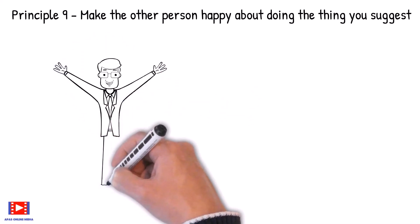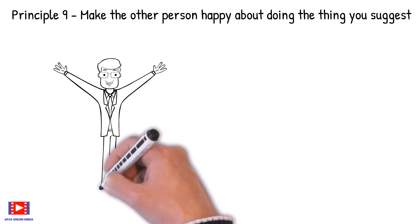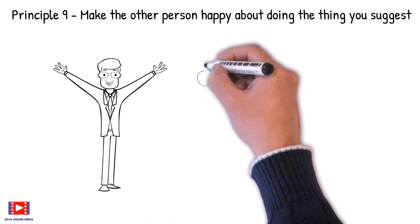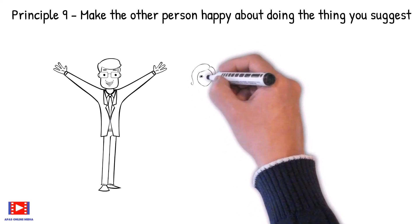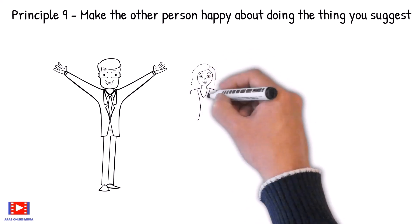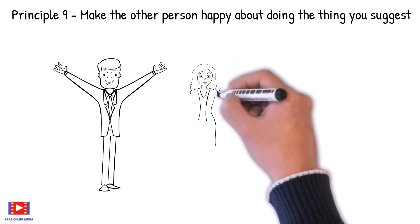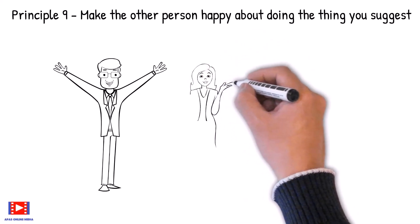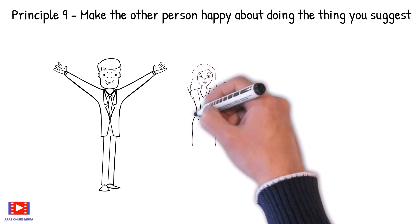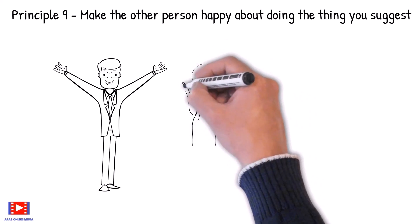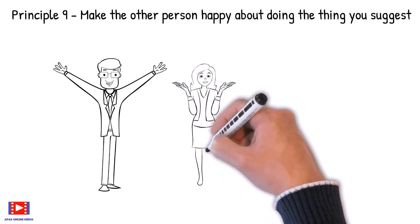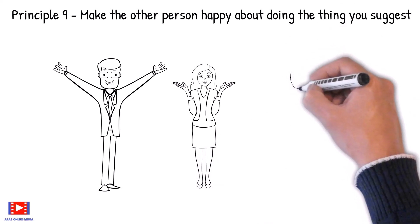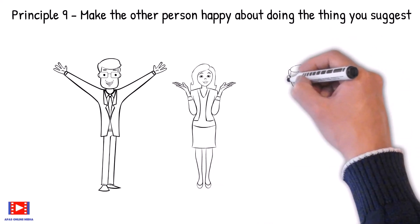And this can be achieved by following these guidelines: 1. Be sincere. Do not promise anything that you cannot deliver. Forget about the benefits to yourself and concentrate on the benefits to the other person. 2. Know exactly what it is you want the other person to do. 3. Be empathetic. Ask yourself what is it the other person really wants. 4. Consider the benefits that person will receive from doing what you suggest.